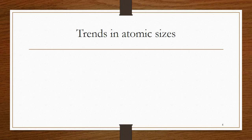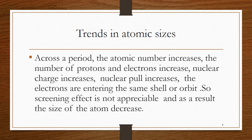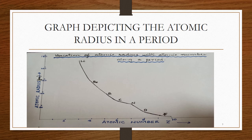What are the trends in atomic sizes? Across a period, atomic number keeps on increasing, which increases the number of protons and electrons. When the number of protons increases, the nuclear charge increases, which increases the nuclear pull. The electrons are entering the same shell or orbit, so the screening effect will not be appreciable and the size of the atom keeps on decreasing. The graph depicts the atomic radius in a period, taking elements in the second period from lithium to fluorine. The atomic size keeps on decreasing gradually due to the increased nuclear pull on the valence electrons.